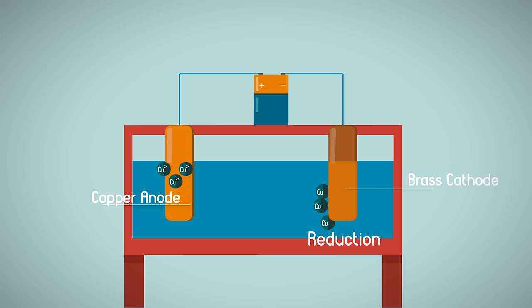At the anode, the current causes the metal atoms to lose electrons and dissolve into the electrolyte solution. The electrons, which the metal atoms lose, flow back to the power source and around to the cathode. Losing electrons at the anode is known as oxidation.